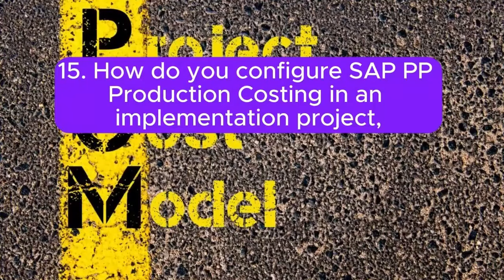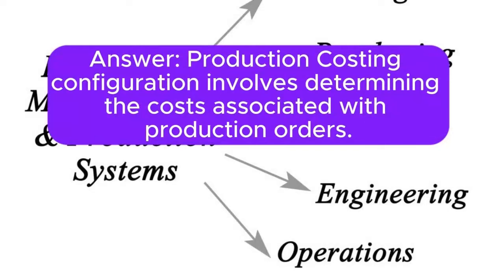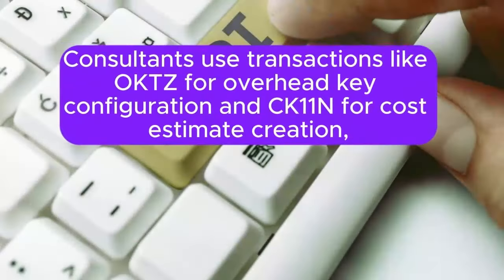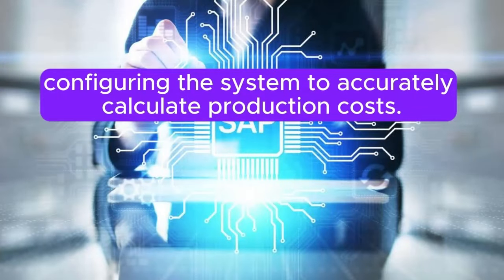Question 15: How do you configure SAP PP production costing in an implementation project, and what considerations are important for accurate cost calculation? Production costing configuration involves determining the costs associated with production orders. Consultants use transactions like OCS for overhead key configuration and CK11N for cost estimate creation, configuring the system to accurately calculate production costs.